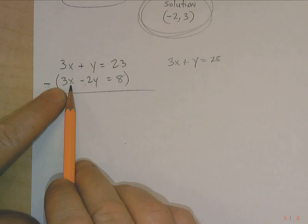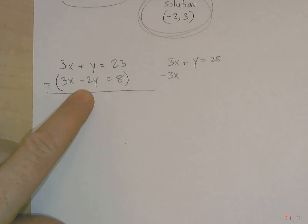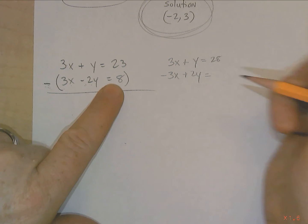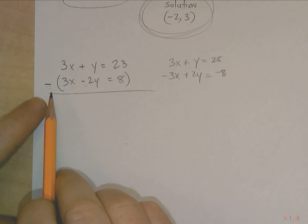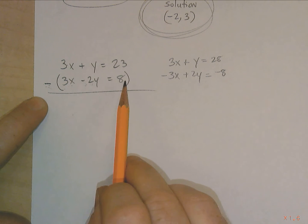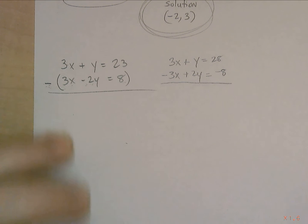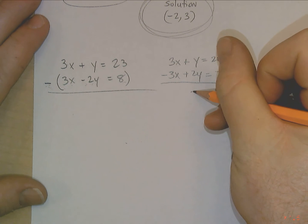So you see how this is a positive 3x? Make that a negative 3x or minus 3x. You see how that's minus 2y? Make that a plus 2y. You see how that's a positive 8? Make that a minus 8 or negative 8. So what I do is I apply the negative to each term, and it changes the sign of each term.